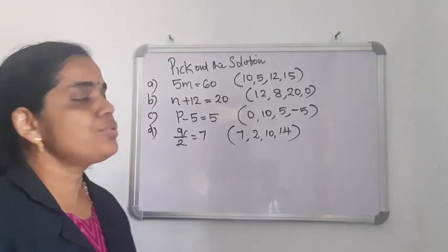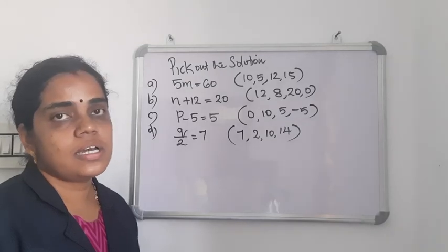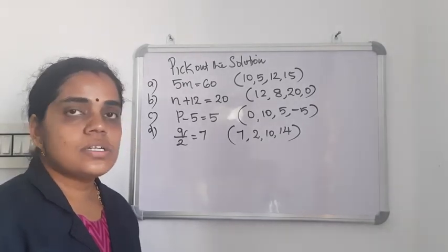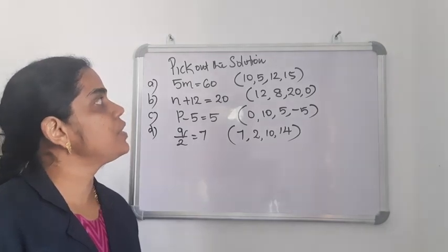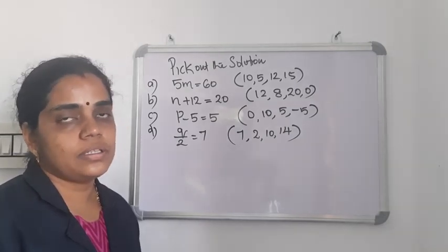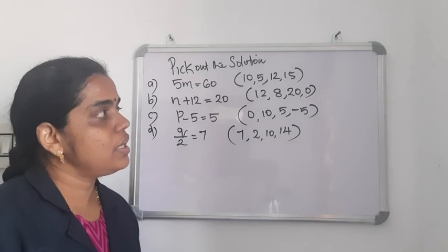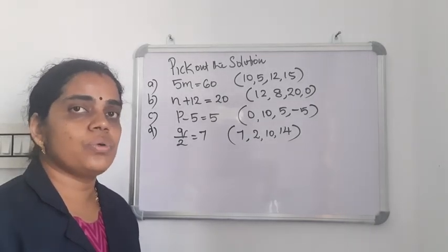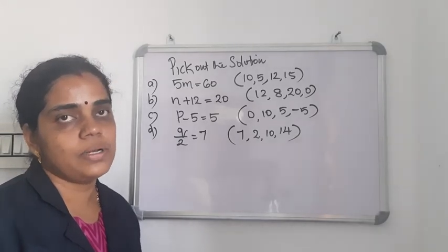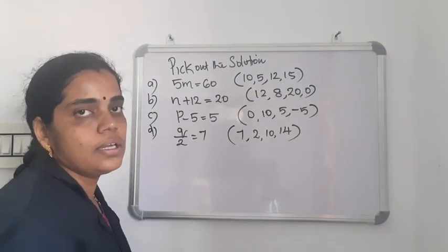Next, we can discuss the solution of an equation. If LHS and RHS are equal, the value of the variable is known as the solution of the equation. Some options are given in brackets — from those options you need to select which is the solution. We can use the trial and error method: give any value to the variable and check. Here options are already given, so we use those numbers.